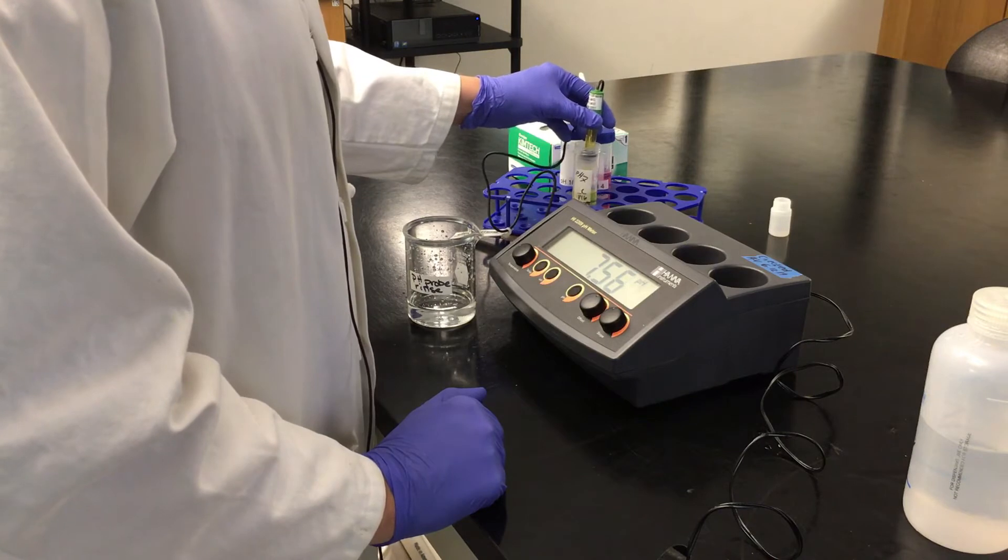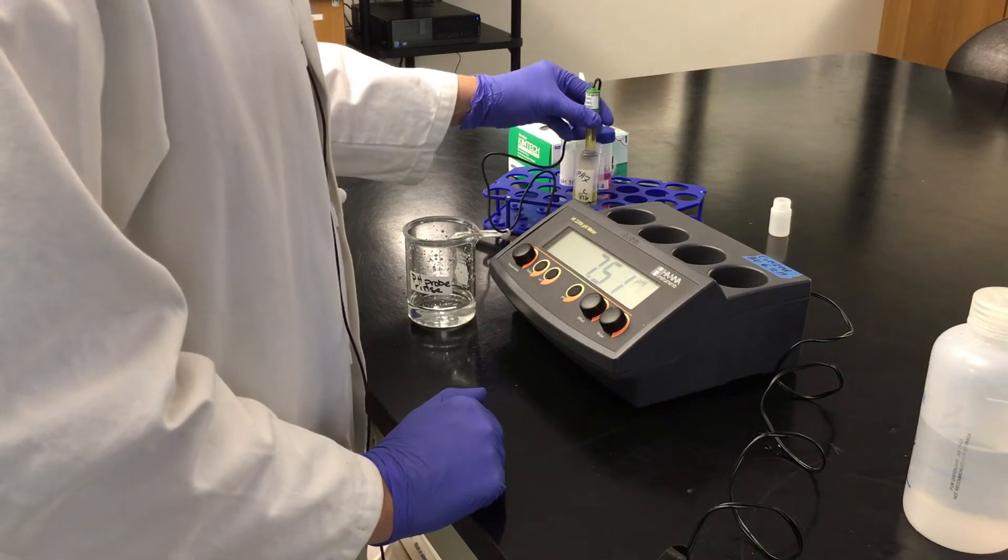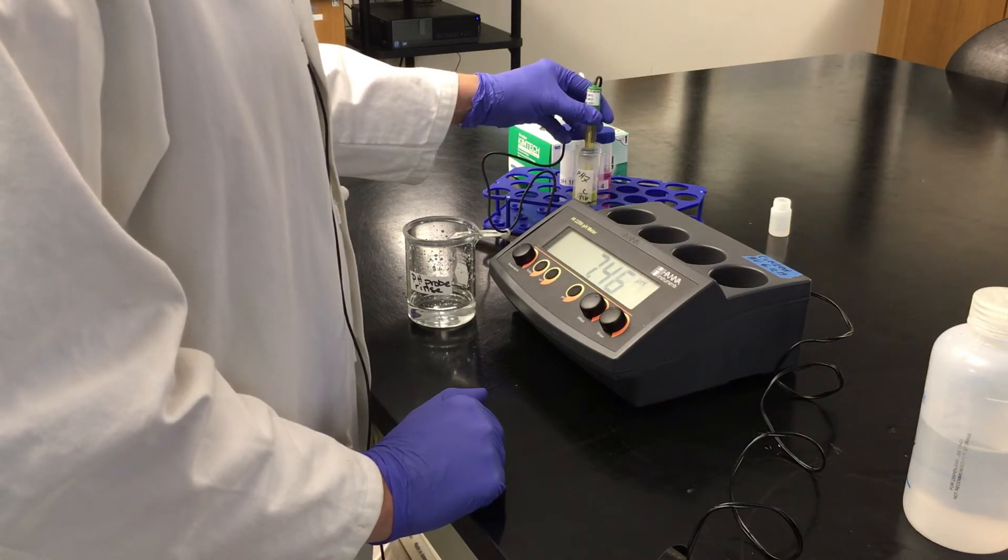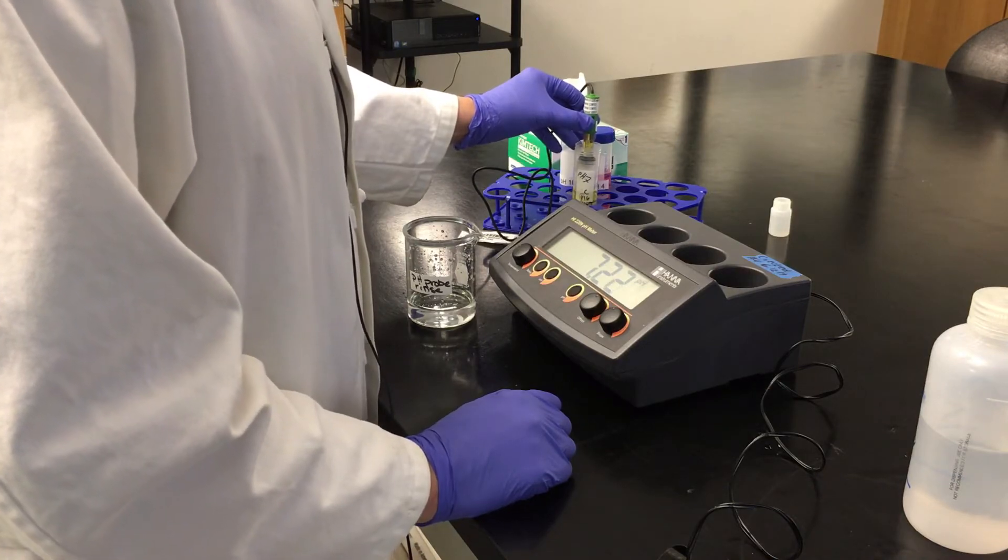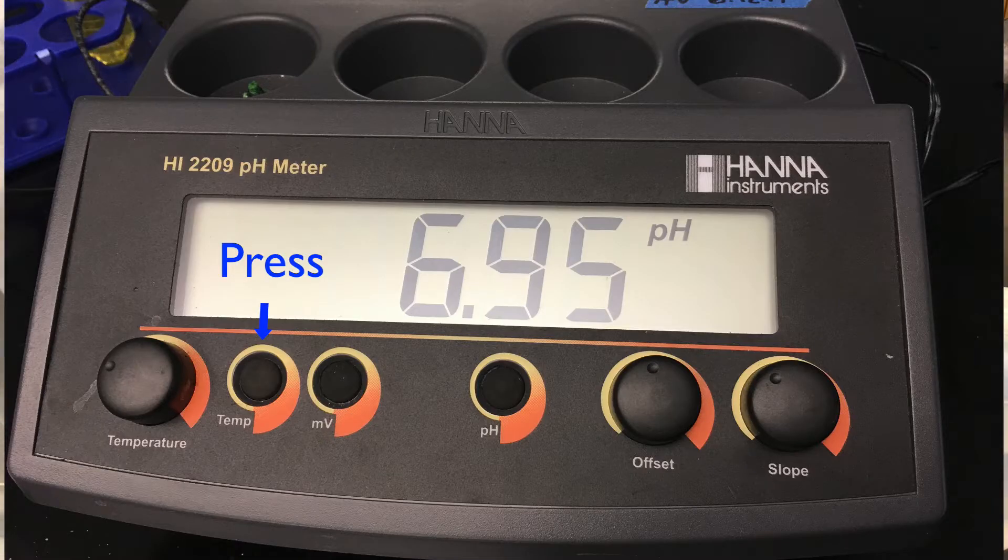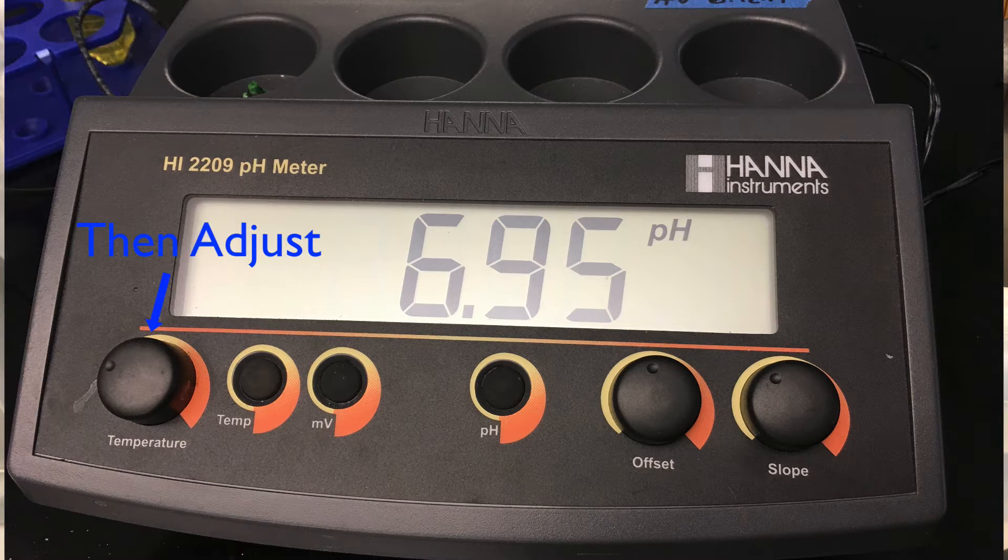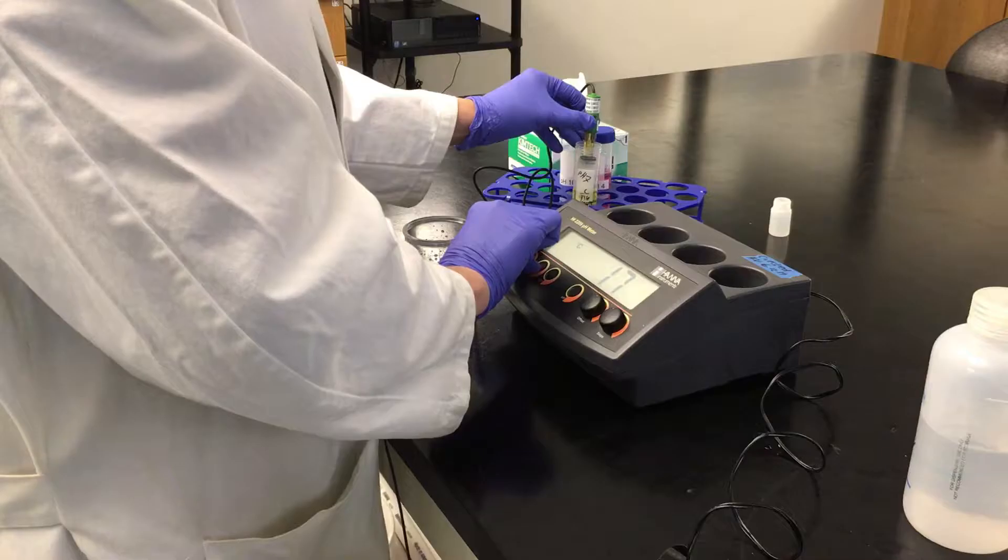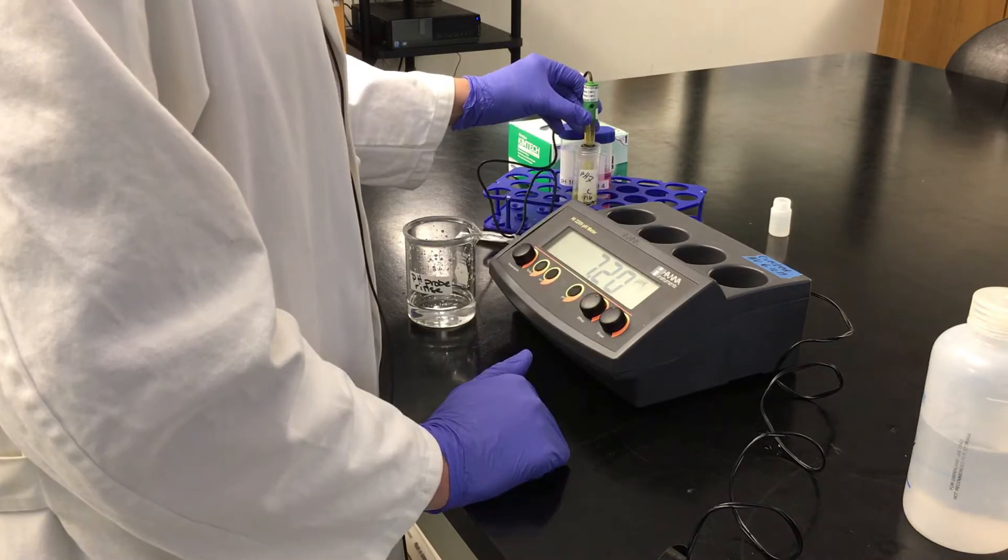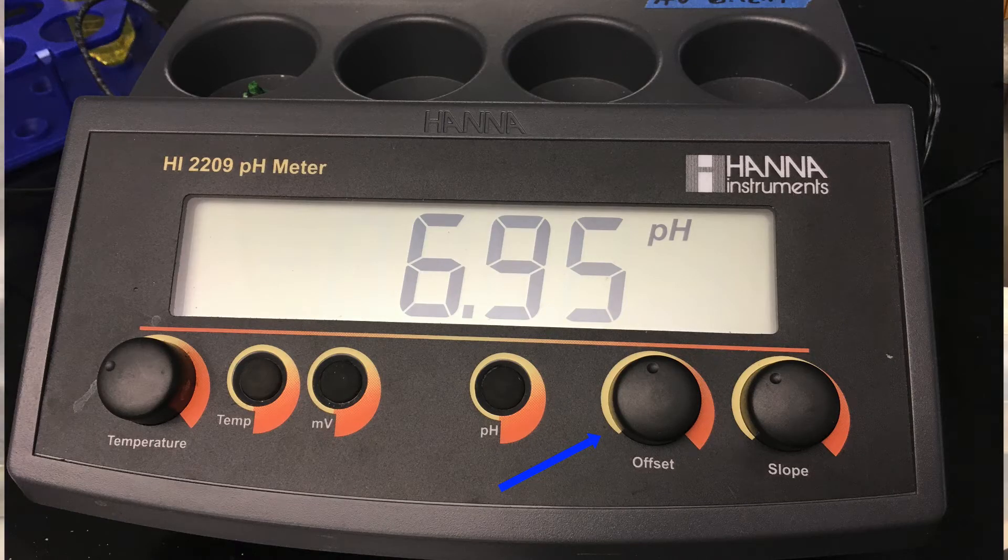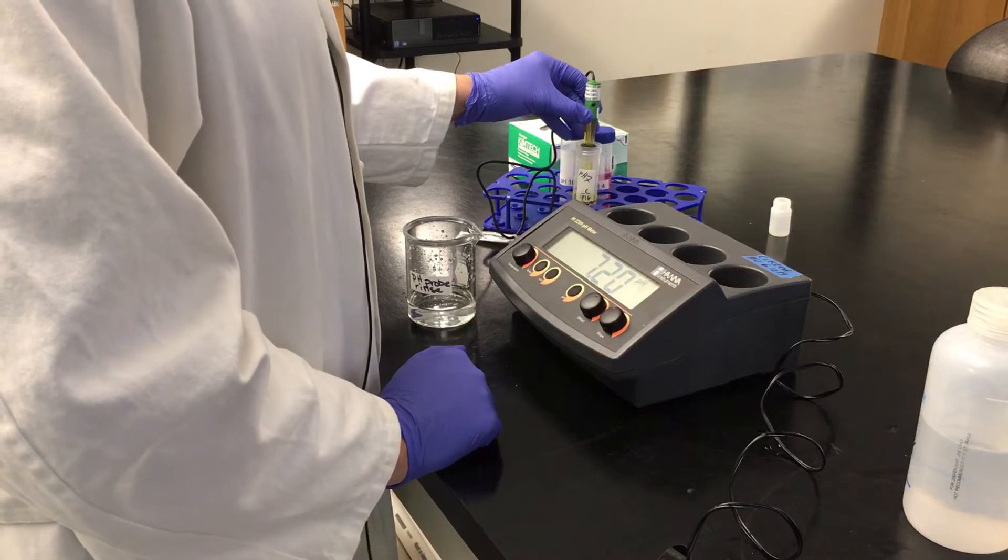At this point, we're waiting for the reading to stabilize. Now that it's stabilized, I'm going to press and hold the temp key, and then move the temperature knob until I get to the appropriate temperature, the reading on our thermometer. Okay, at this point, we're going to adjust using our offset knob to adjust the pH so it reads that it's pH 7.